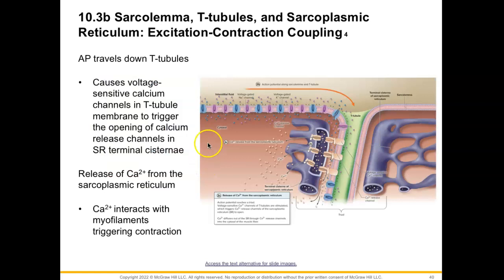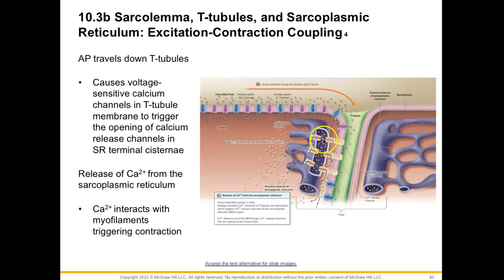The action potential propagates down the T-tubule, and this causes voltage-sensitive calcium channels in the T-tubule to trigger the opening of calcium within the sarcoplasmic reticulum terminal cisternae. That release of calcium from the SR moves out so it can interact with our myofilament — specifically the actin myofilament — to trigger contraction.